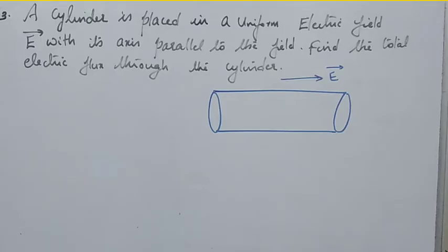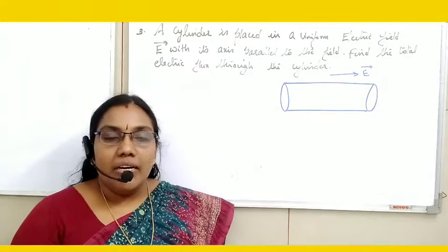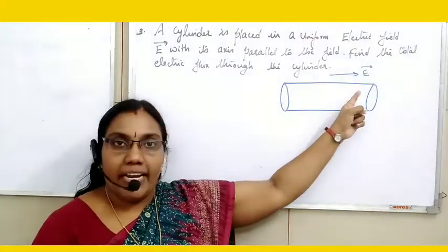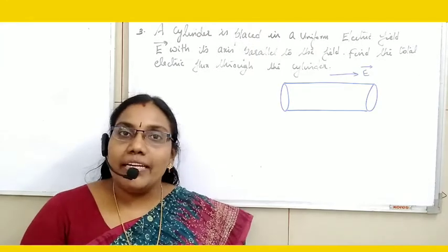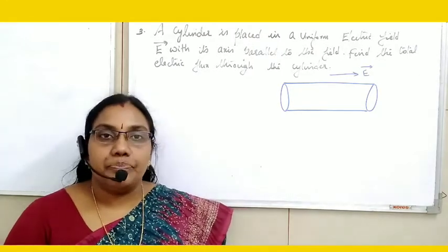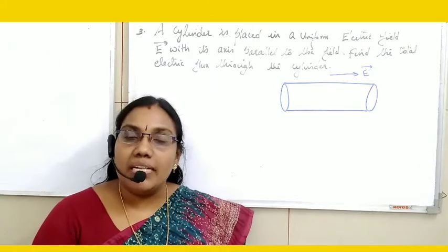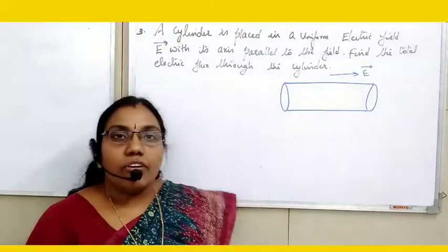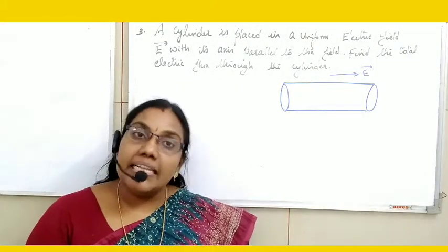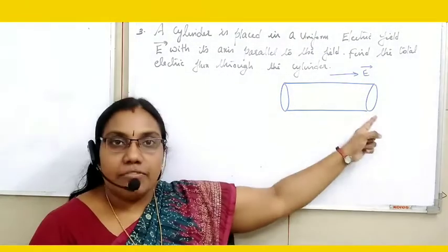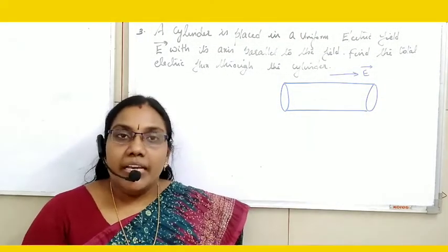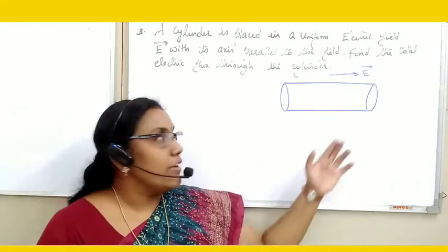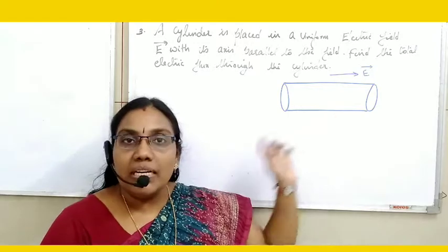Third question: a cylinder is placed in a uniform electric field E⃗ with its axis parallel to the field. Find the total electric flux through the cylinder. The electric field is towards the right. A cylinder has three surface areas: two flat surface areas and one curved surface area. We need to find the flux through each.